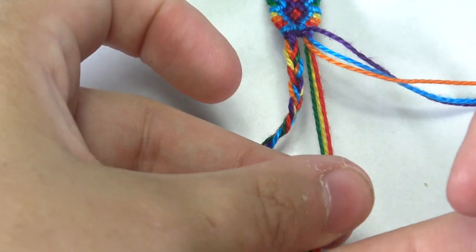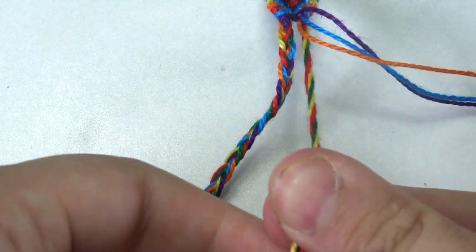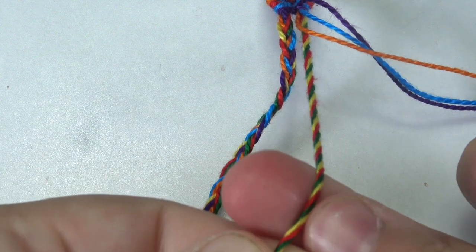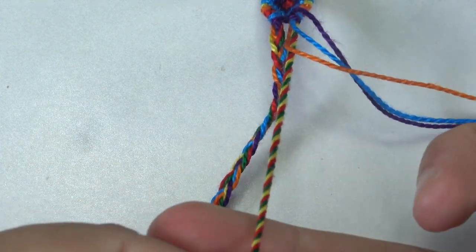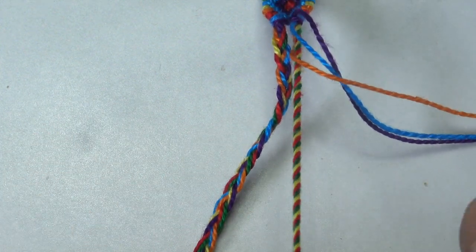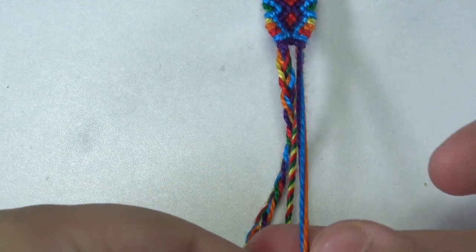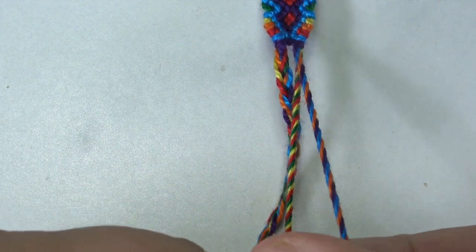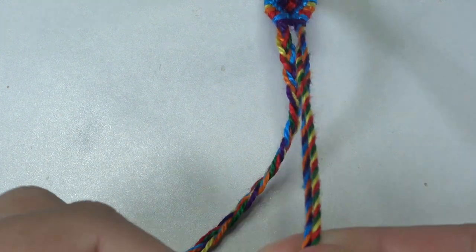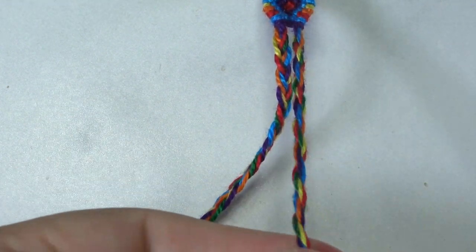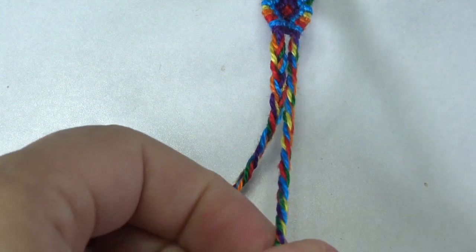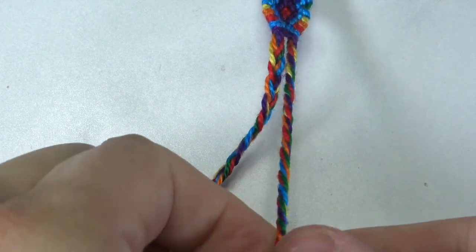Or you can twirl the endings, going both in one direction. Take half the strings of one color, half the strings of the other, twist the same direction, and then twist everything together. I like this one a little bit more than the braided version.